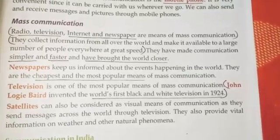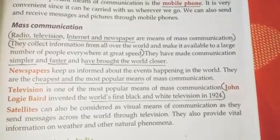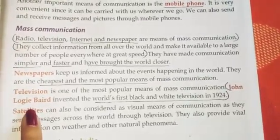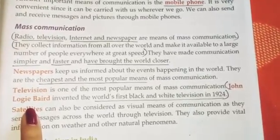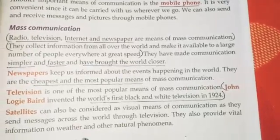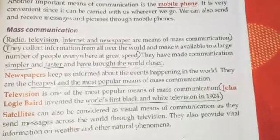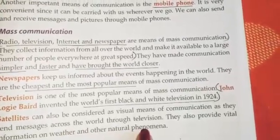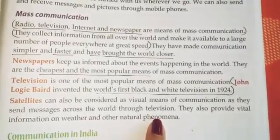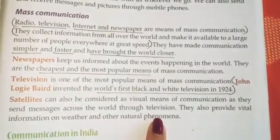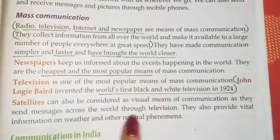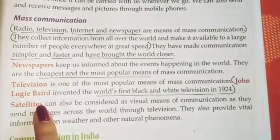It is possible because of the artificial satellite which is present in space, and it gives us information about all of these things — what will happen in the future regarding the weather and natural calamities. So we can protect ourselves from all of those natural calamities or natural disasters. That is also a means of mass communication.